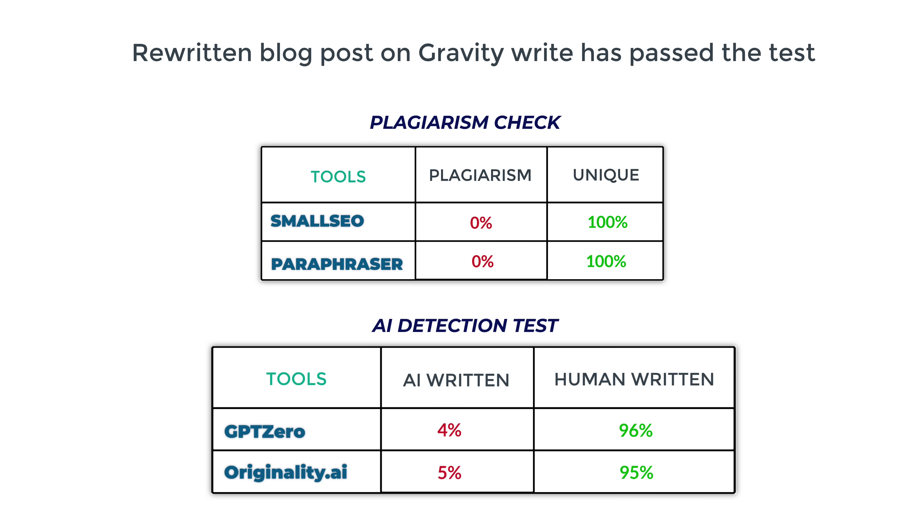Let's check with another tool. Here it shows 95% of the content is human-written. So now it's clear that the rewritten blog post on GravityWrite has passed the test. We've successfully rewritten the ChatGPT generated blog post into a human-written masterpiece.